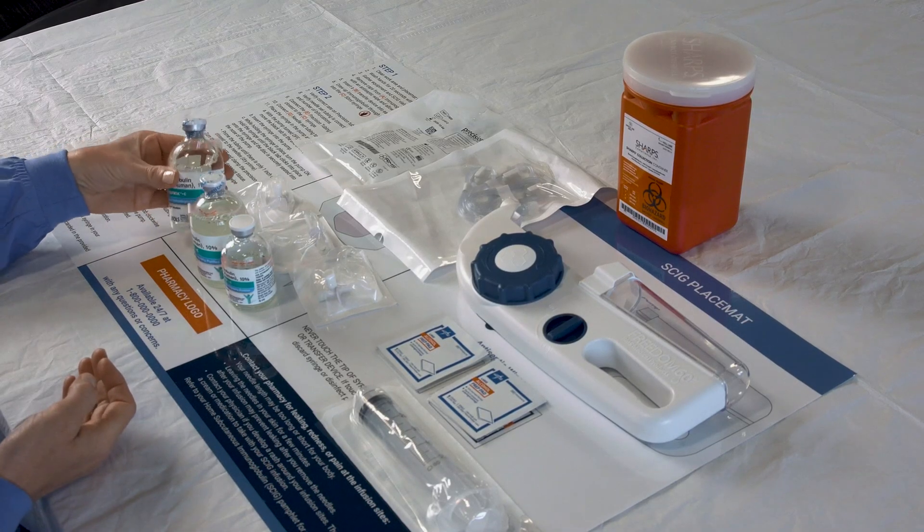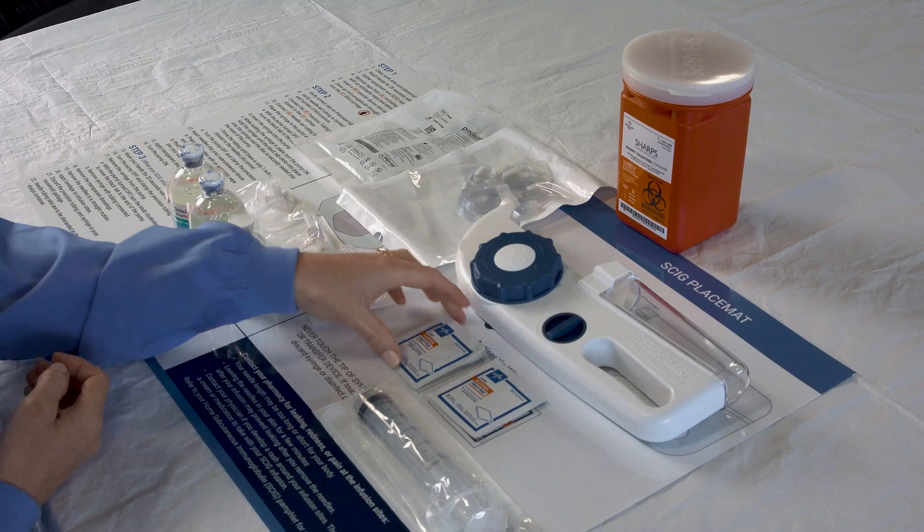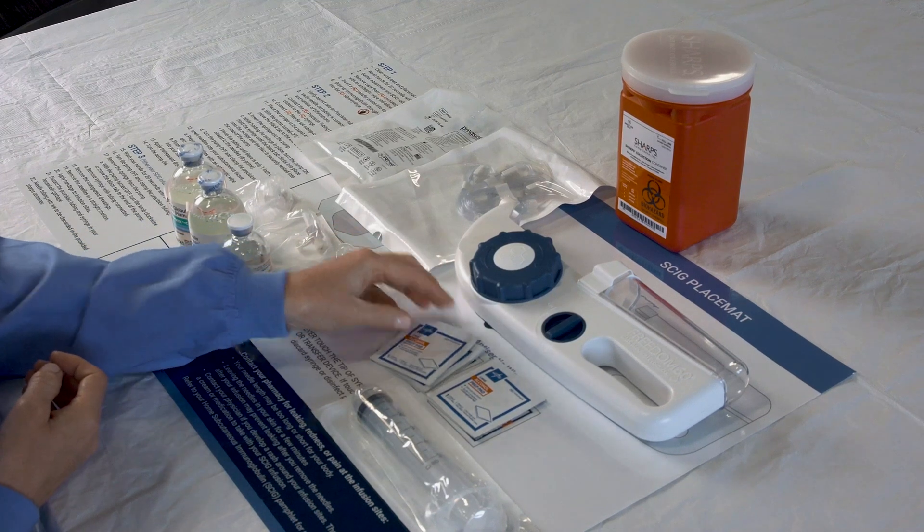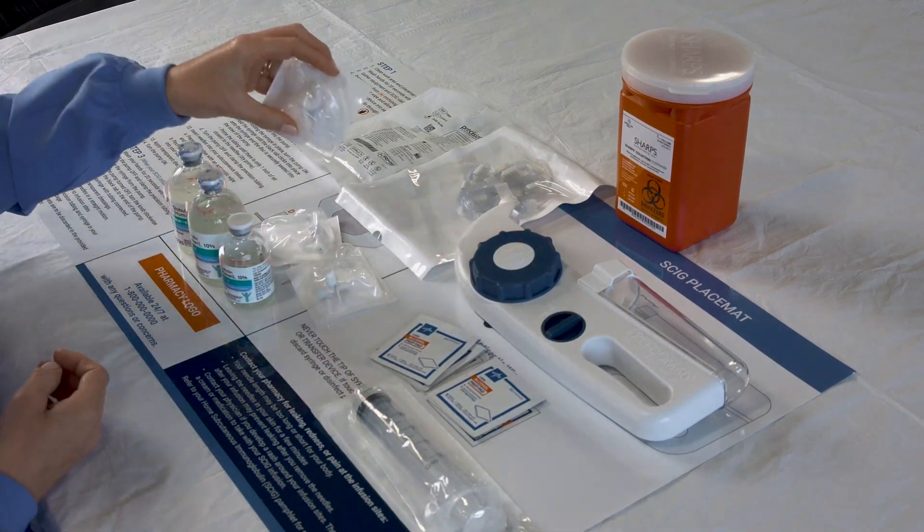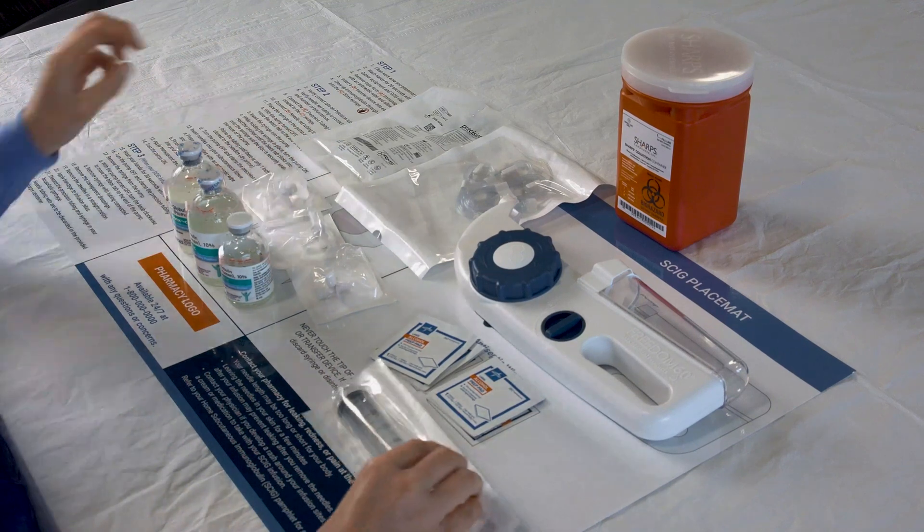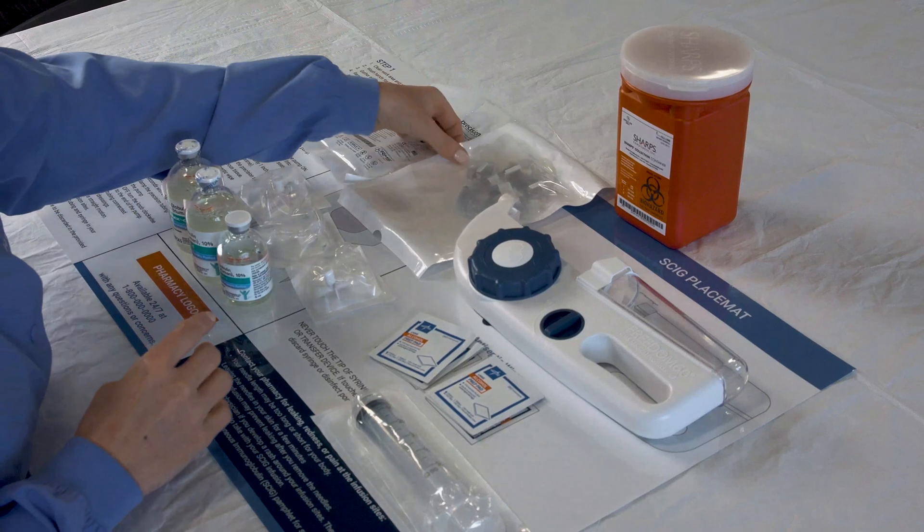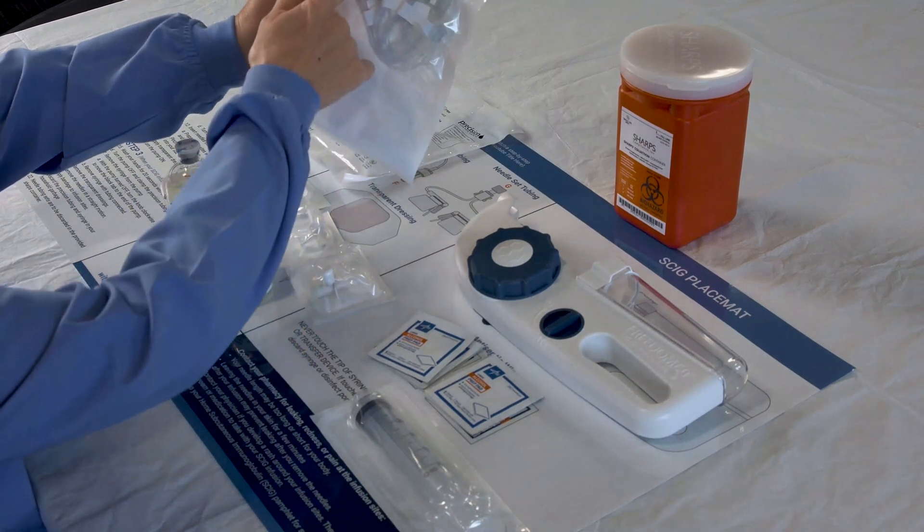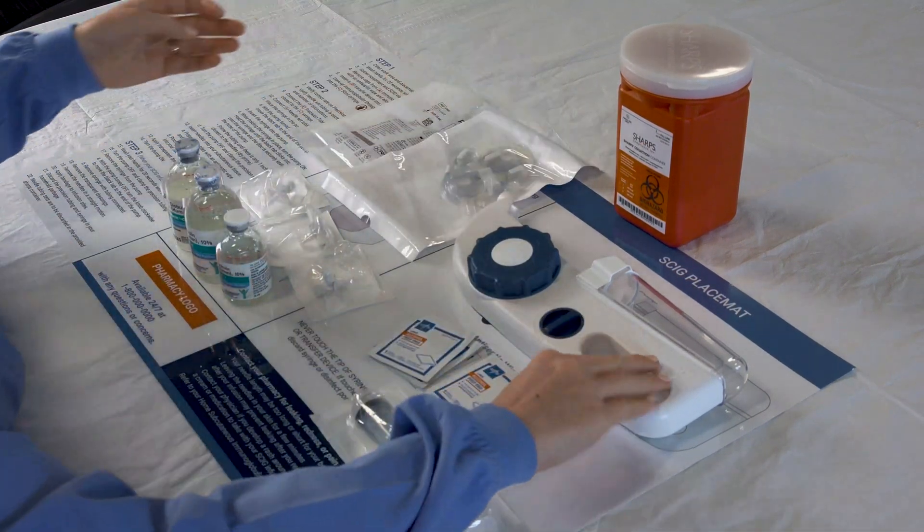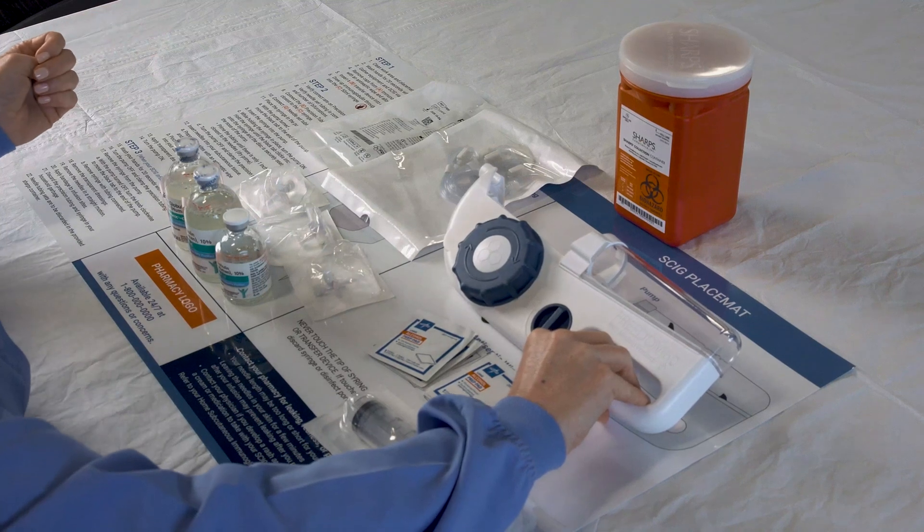On your SCIG placemat, gather your immunoglobulin vials, antiseptic wipes, transfer devices, 50ml syringe, precision tubing, needle set tubing with transparent dressing, and Freedom 60 pump as shown.